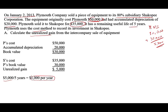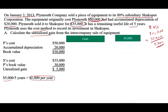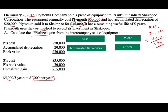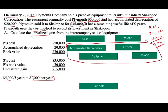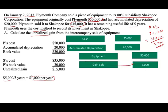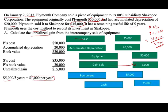Let me show you the journal entry, because if you understand what happened at P company and at S company, the subsequent entries will be much easier to understand. P company debits cash $35,000 (sold the asset for $35,000), debits accumulated depreciation $20,000 (to remove it), and credits equipment $50,000 (removing the asset), then credits a gain of $5,000. S company debits equipment $35,000 and credits cash $35,000. The debit and credit cash cancel each other out.